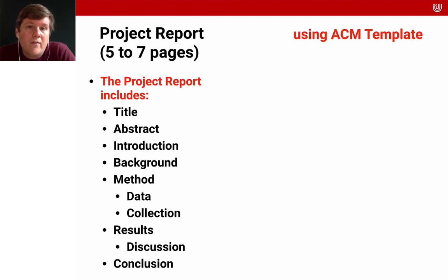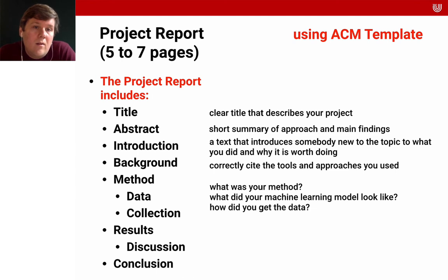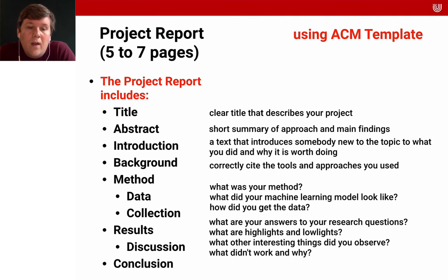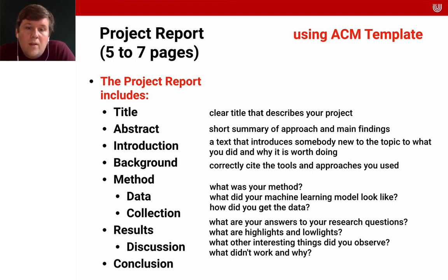The final project report is supposed to be five to seven pages using the ACM template — the Association for Computing Machinery. It should contain the same elements as the exposé, probably in updated form: a title, a short summary, an introduction, situate yourself in the background, and then show your results. What are the answers to your research questions? What are the highlights and lowlights of your approach? What sounded good but didn't work? What surprised you? What interesting things did you observe? What didn't work and why? It's all about learning, so be honest — don't oversell bad results. If you have negative results, just write them up well and you'll be fine.